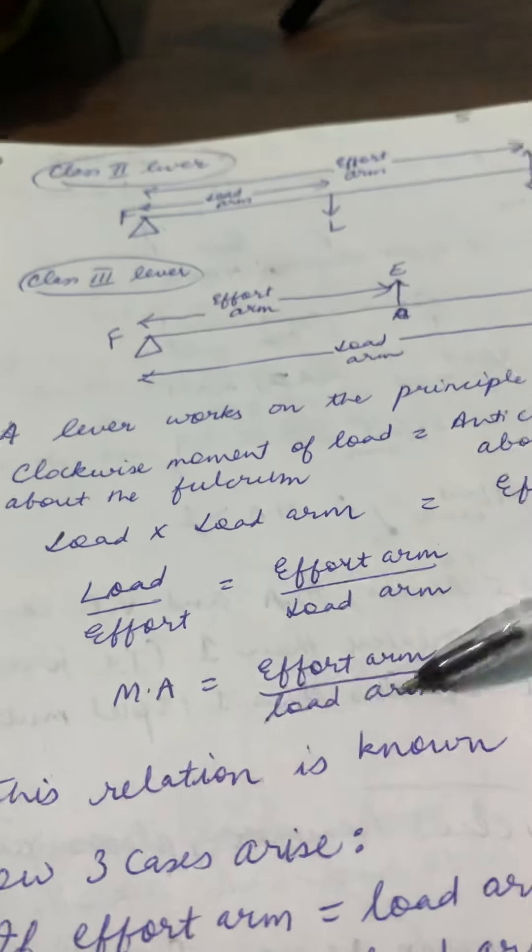Then there is your class one lever. The fulcrum is in the middle, but if the fulcrum is very close to the effort, the load arm becomes large and the effort arm becomes small, so mechanical advantage is less than 1. If the fulcrum is exactly in the middle, the load arm and effort arm are equal, so mechanical advantage equals 1. And if the fulcrum is close to the load, the effort arm is large and load arm is small, so mechanical advantage is greater than 1.